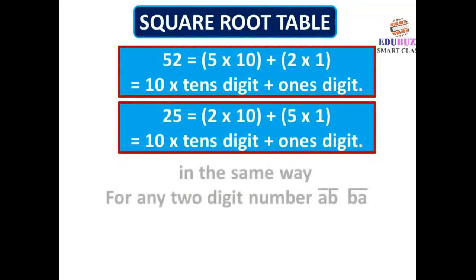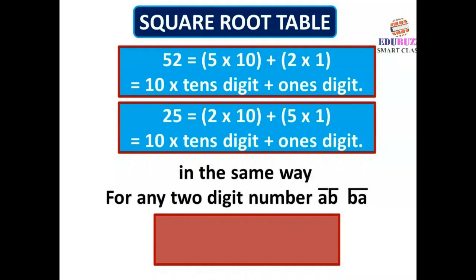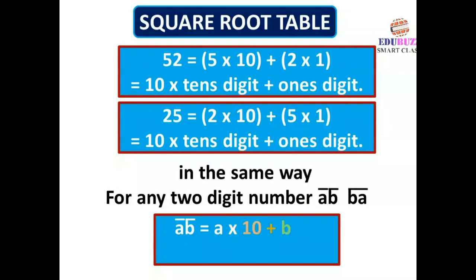In the same way, for any 2-digit number AB and its reverse BA: AB equals A times 10 plus B times 1, and BA equals B times 10 plus A times 1.